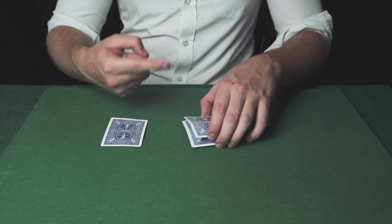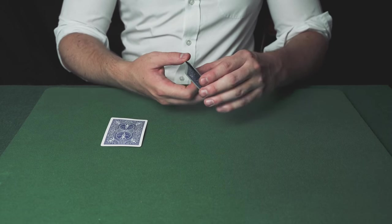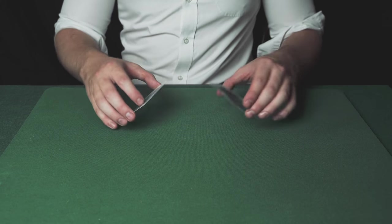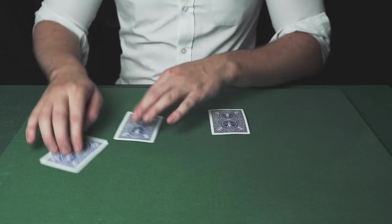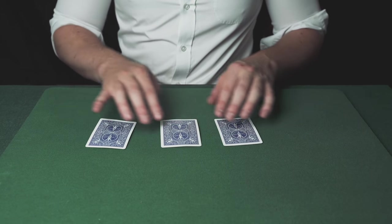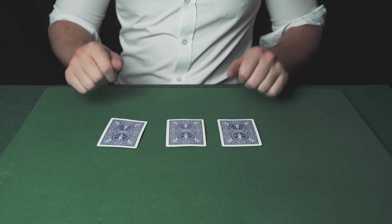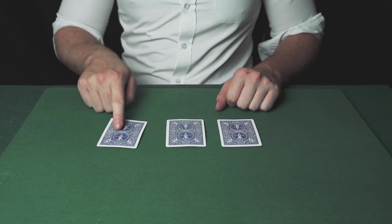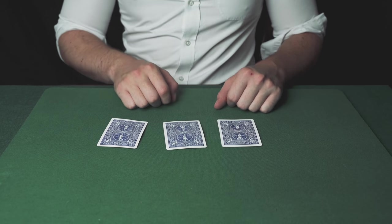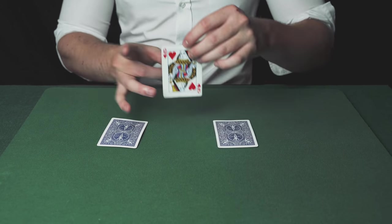He asks which card is the queen. If you guessed this card, you'd be correct. The magician says he's going even faster this time. He throws the queen onto the table and mixes up the cards, then asks which one is the queen. Again, the spectator is correct.